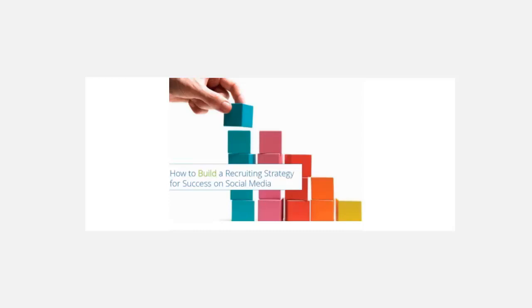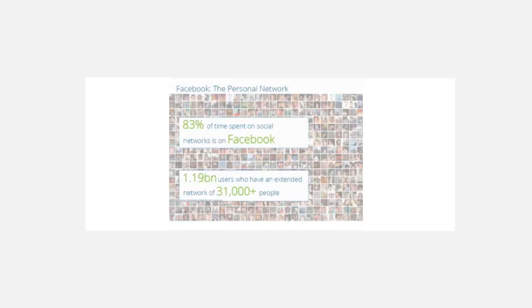Those are the four trends. Now, how do you build a strategy versus just surfing the wave? 83% of time spent on social networks is on Facebook — every other social network competes for just 17% of everyone's time. Facebook is close to a monopoly globally, incredibly strong in almost every market except China. The time spent on the network is incredibly engaging, and the reach of the average user is about 31,000 people just two connections away.